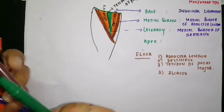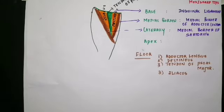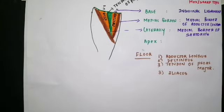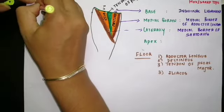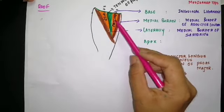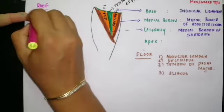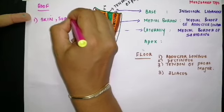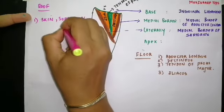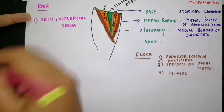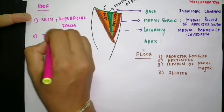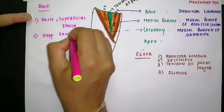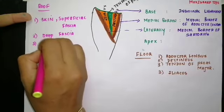Now we will discuss the roof of the triangle. The roof is formed by structures lying superficial to the triangle. The skin and superficial fascia lie over the triangle, and the deep fascia also forms the roof. The cribriform fascia and the saphenous opening are also part of the roof.